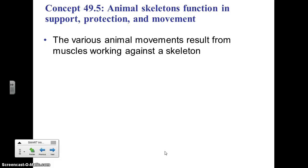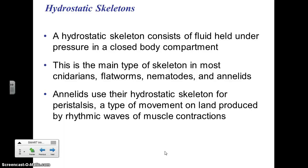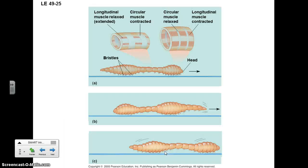A skeleton can be defined in different ways — it's what allows for movement. With a hydrostatic skeleton, there is nothing hard inside the organism. It uses the pressure of fluid — mostly water — inside the organism to create pressure against the outer skin. Muscles can then contract and squeeze certain parts of the organism, forcing the fluid into other parts.